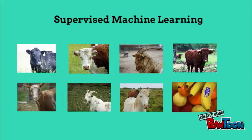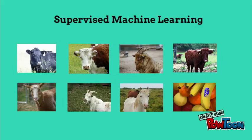Now that we've given the computer the labeled cow and goat images, the computer is able to use supervised machine learning to predict what each of these images is.